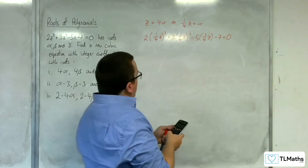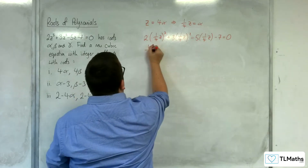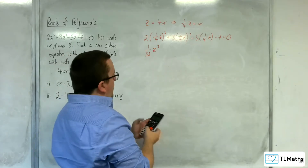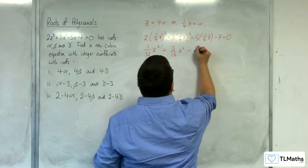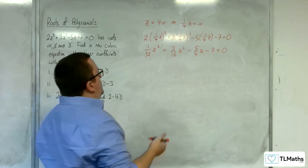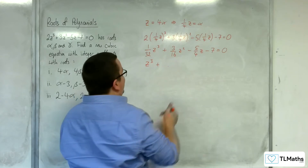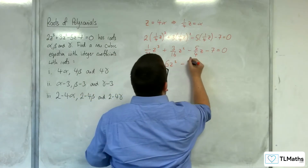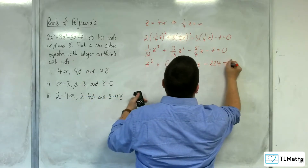So we've got 2 times 1 quarter cubed, which is 1 over 32, so 1 over 32 z cubed. Then 3 lots of 1 quarter squared, so 3 sixteenths z squared. Then take away 5 quarters z, take away 7 equals 0. So if I multiply through by 32, we get z cubed plus — 3 over 16 times 32 is 6 — 6z squared, then minus 5 quarters times 32 is minus 40z, and then 32 sevens is minus 224 equals 0.